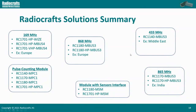Looking at it from the product number angle: at 169 MHz we have the RC1701 options for either WISE or M-Bus 4, including a very high power M-Bus 4 variant. For 433 MHz, we have the RC1140 M-Bus 3. For 865 MHz in India, we have the RC1170 and RC1170 high power M-Bus 3. For pulse counting modules, all bands are supported. For 868 MHz, we have the RC1180 M-Bus 3 and RC1180 high power M-Bus 3. More details about part numbers, modes, and supported frequencies are available on our website, and you can contact sales@radiocrafts.com for more information.